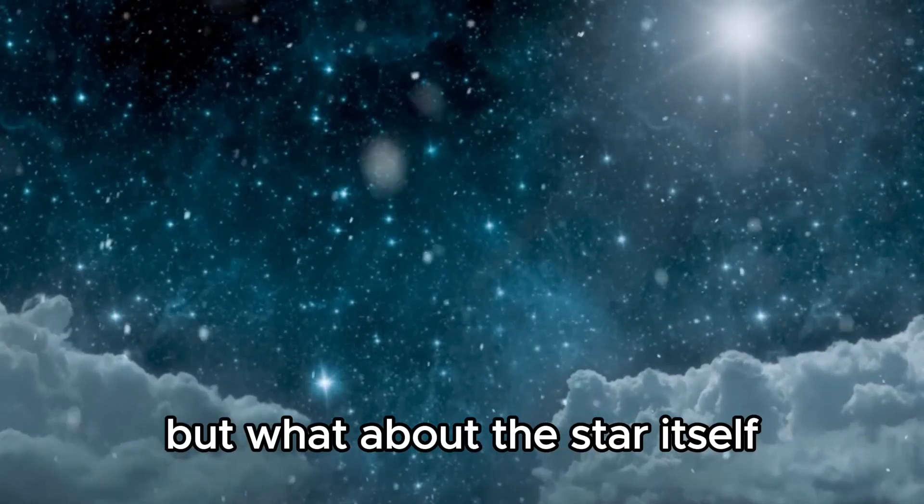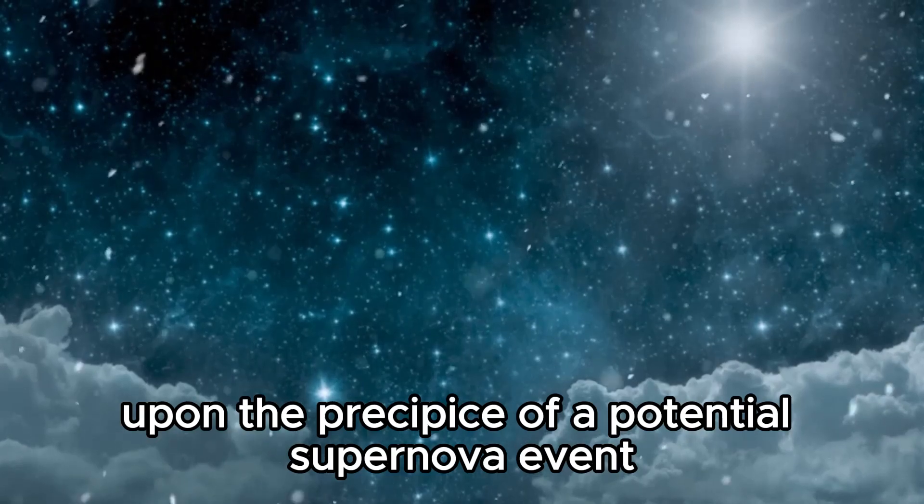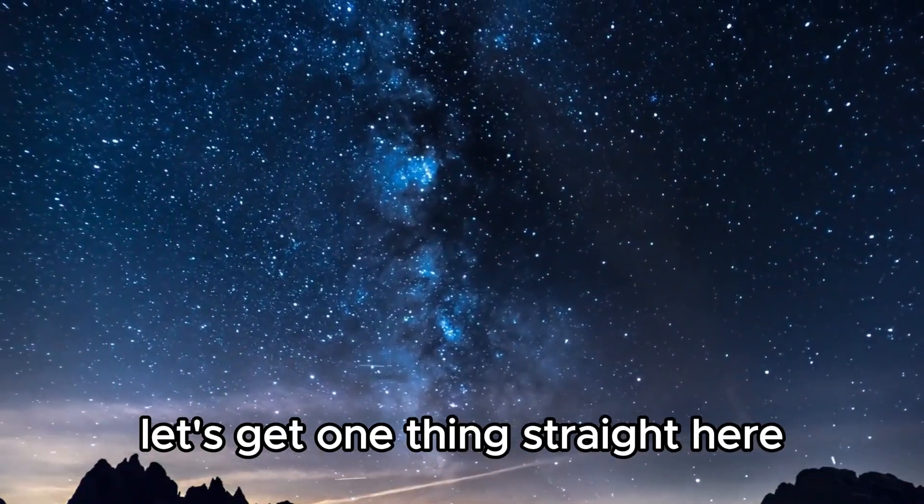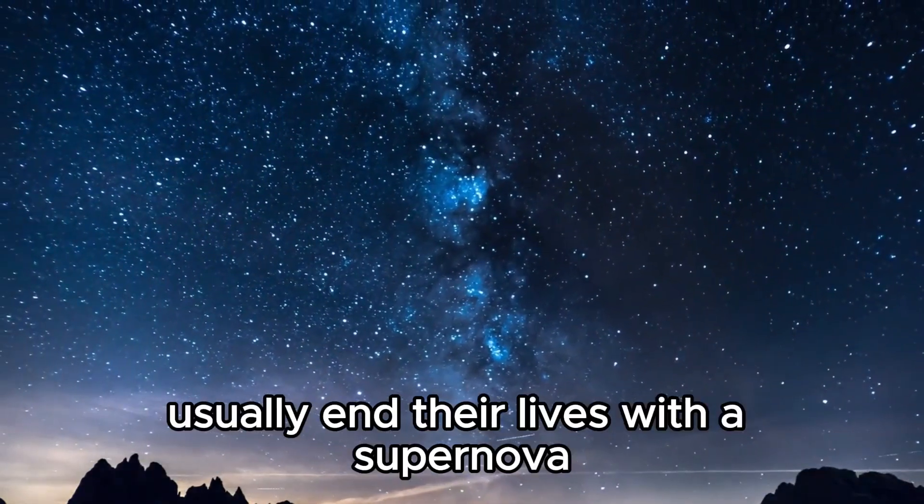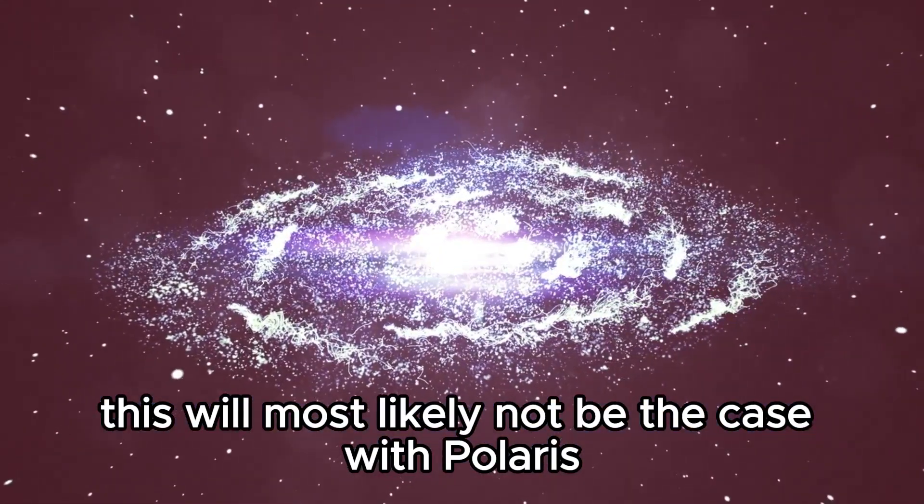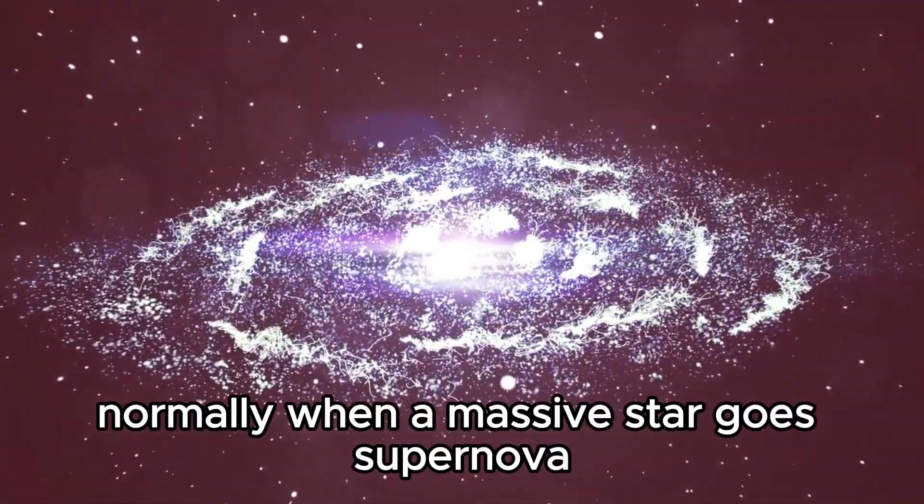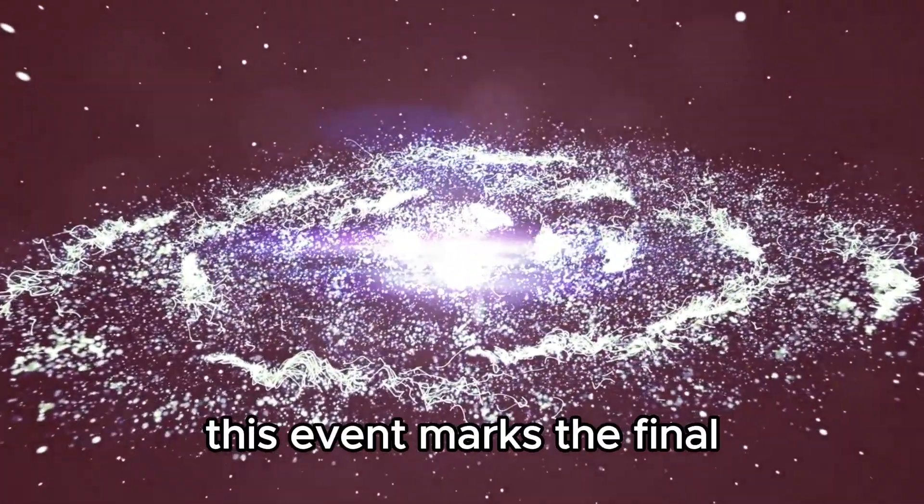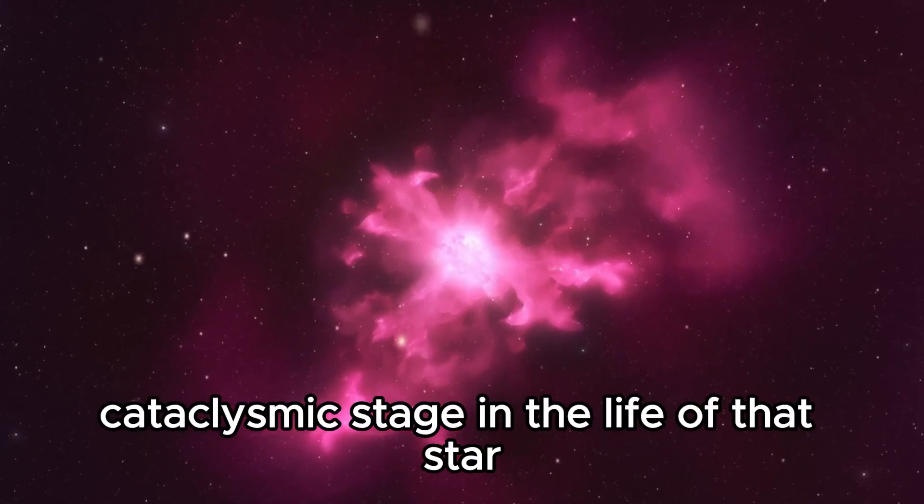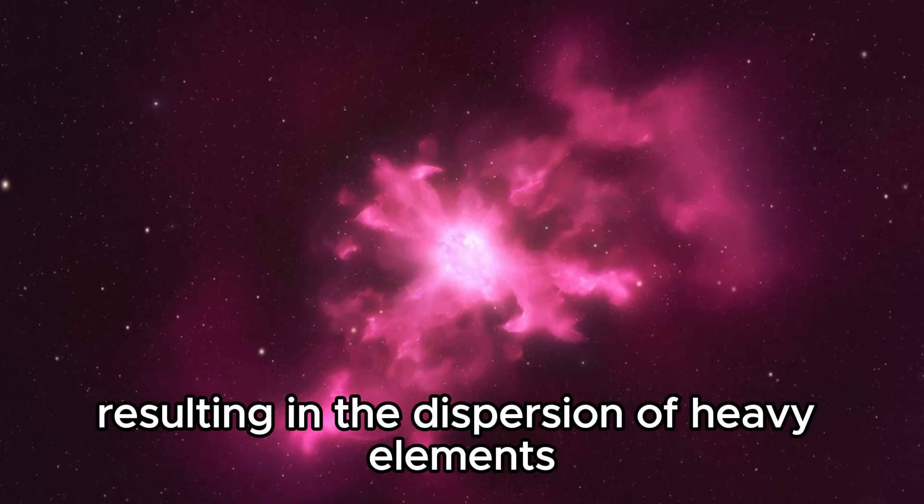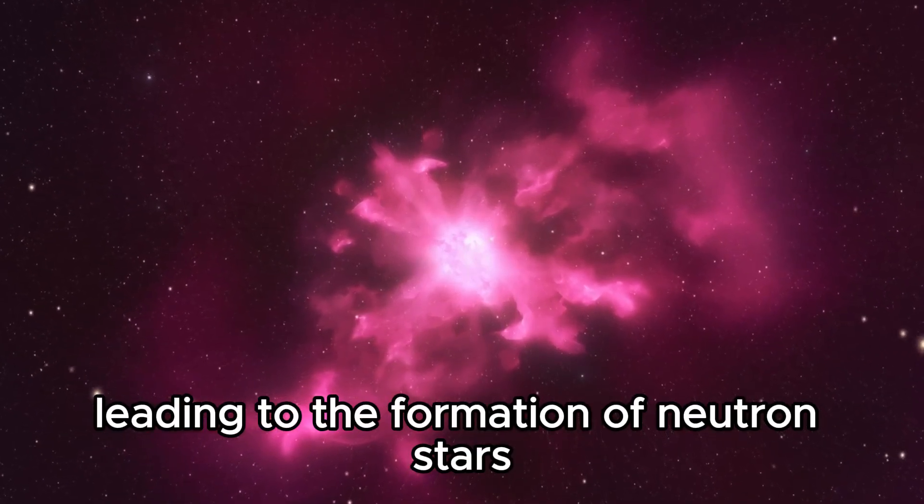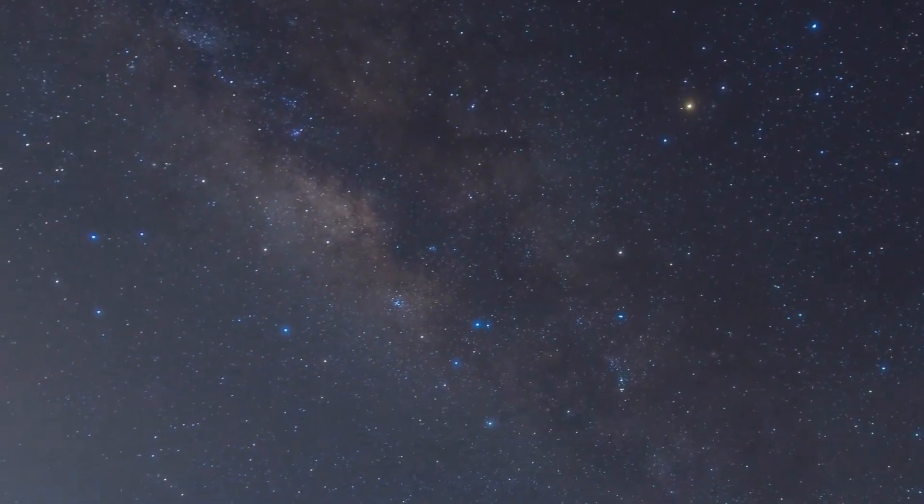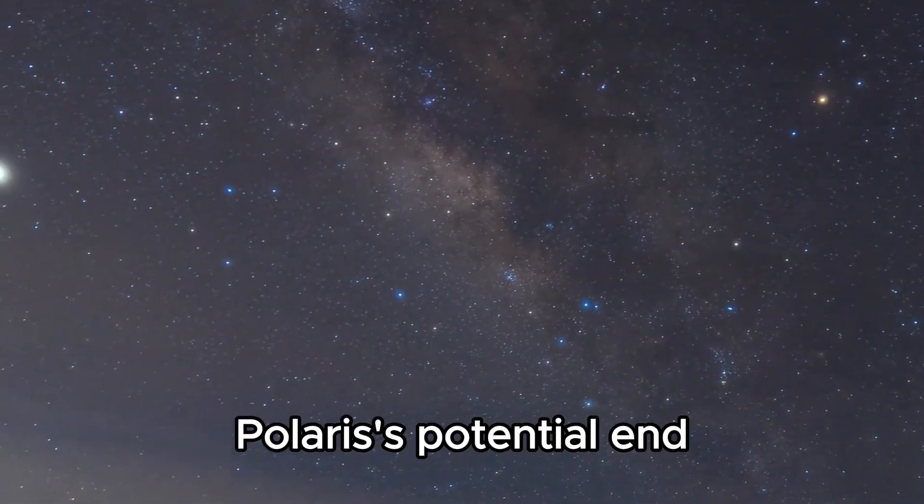But what about the star itself upon the precipice of a potential supernova event? What will be the post-cataclysmic fate of Polaris? Let's get one thing straight here. While giant stars usually end their lives with a supernova, this will most likely not be the case with Polaris. Normally, when a massive star goes supernova, a colossal explosion occurs within it. This event marks the final cataclysmic stage in the life of that star, resulting in the dispersion of heavy elements and sometimes leading to the formation of neutron stars or black holes. This process involves a complete collapse of the star's core, followed by impending supernova, Polaris's potential end.